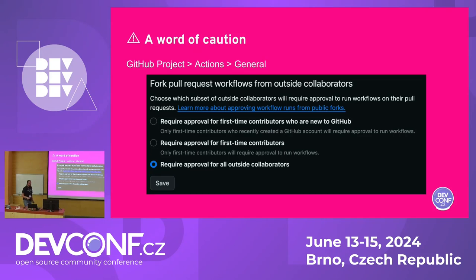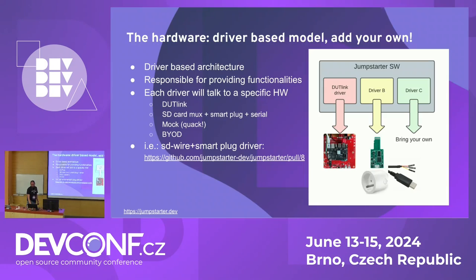Just a cautionary note: if you use something like this in GitHub, please make sure you set 'Require approval for all outside collaborators' so workflows won't run automatically. At least today, you need root access to use JumpStarter with this hardware on your runner. We are looking for ways to improve that and remove that necessity.